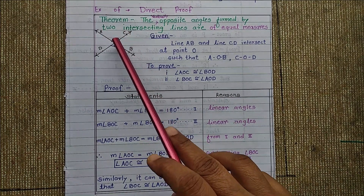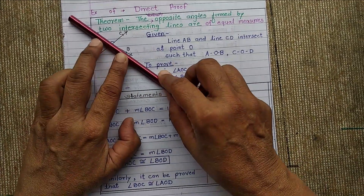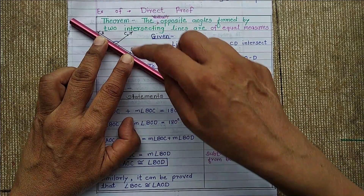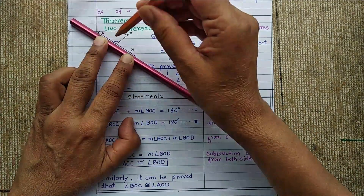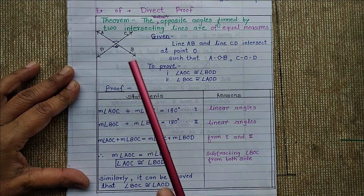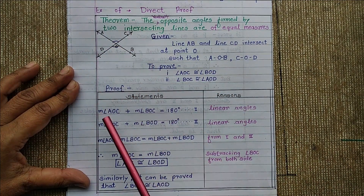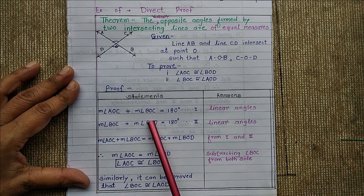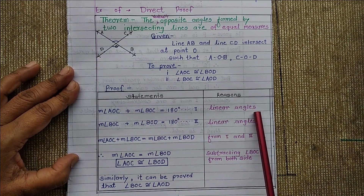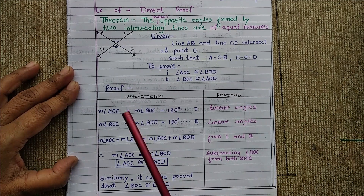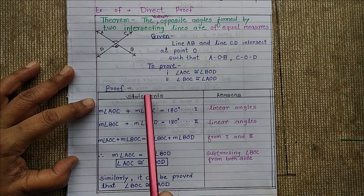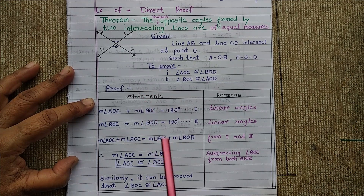Angle AOC and angle BOC form a linear pair. The measurement of angle AOC plus the measurement of angle BOC is equal to 180 degrees, because they form a linear pair.